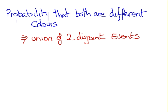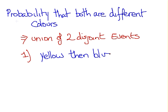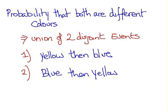Now we're going to look at the probability that both balls drawn at random are different colours. What we have to consider is that this is the union of two disjoint events. The first event is that the first ball drawn is yellow and then the second ball is blue. The second disjoint event is that the first ball is blue and then the second ball is yellow. We have to find the probability of each event, and as these are two disjoint events, we simply add the two values together.